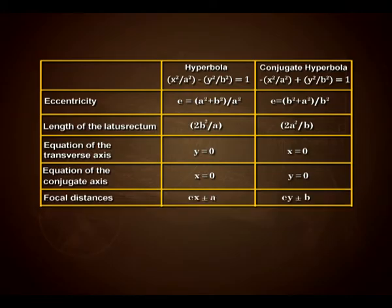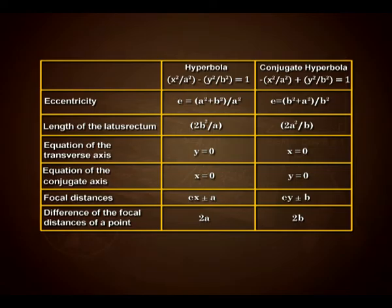The focal distance in case of hyperbola is ex ± a and for conjugate hyperbola it is ey ± b. The difference of focal distances of a point is 2a for the hyperbola and 2b for the conjugate hyperbola.